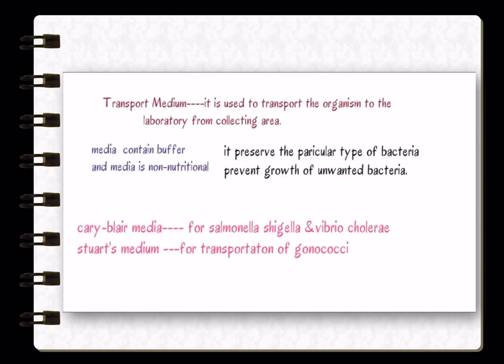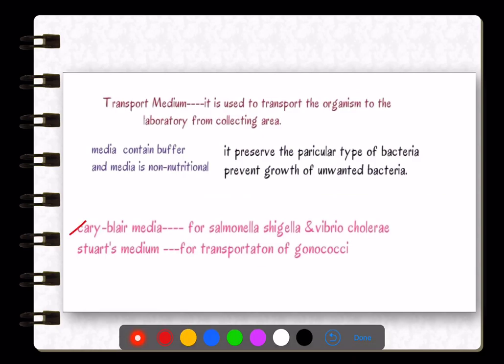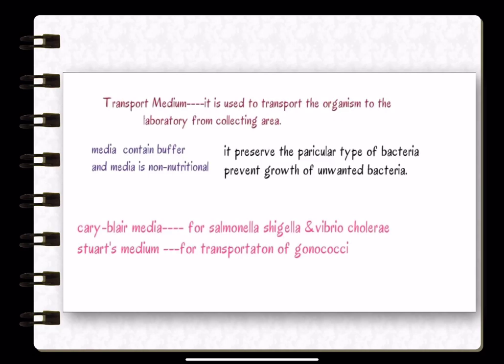The final type is transport medium, used to transport organisms from the collection area to the lab. Examples are Cary Blair medium for Salmonella, Shigella, and Vibrio, and Stuart's medium for transportation of gonococci. Transport media preserve the bacteria and prevent growth of unwanted organisms during transport.